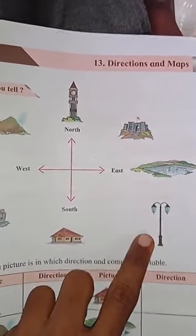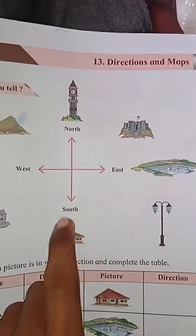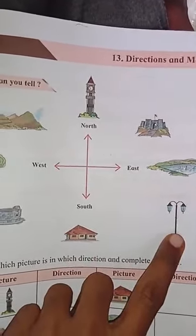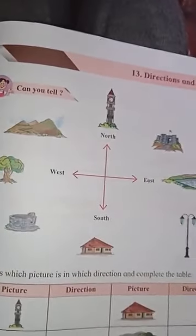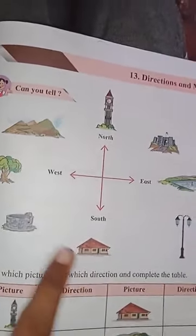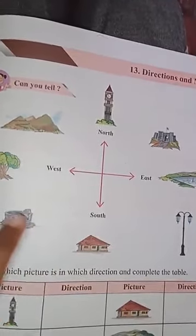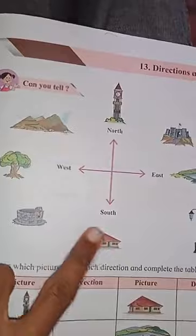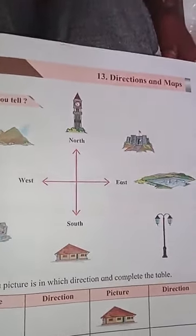The fort is in the Northeast direction. The street lamp is between East and South - we call that Southeast - so the street lamp is in the Southeast direction. Between the tree and the house, the well is in the Southwest direction.